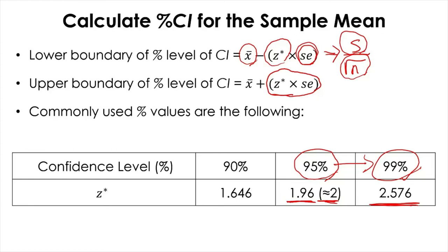It is also common to report plus or minus one standard deviation instead of a 95% confidence interval along with the sample mean. But if you do that, it has a slightly different meaning compared to the confidence interval — they serve different purposes. If you want to indicate the average variability of the data or observations in the sample, you use standard deviation. On the other hand, if you want to indicate the amount of uncertainty you have in the estimation of the unknown population mean, then you report the confidence interval.